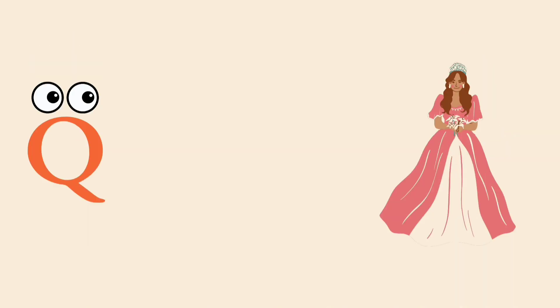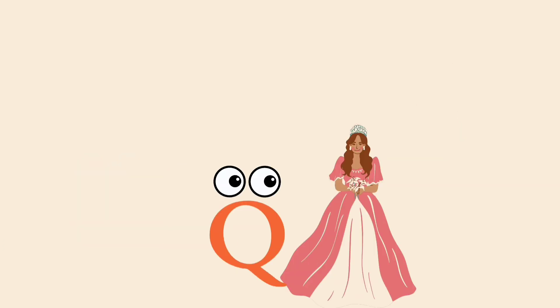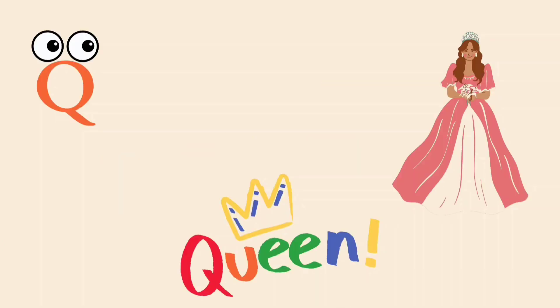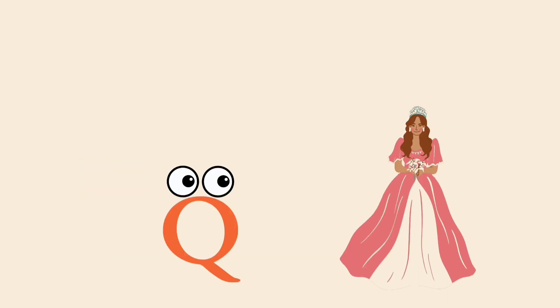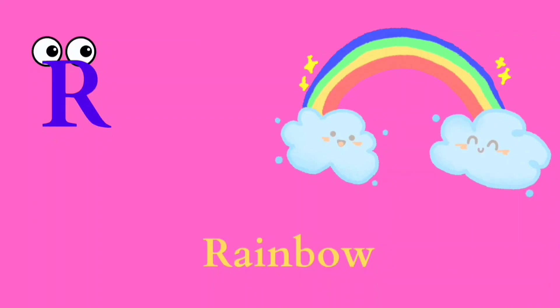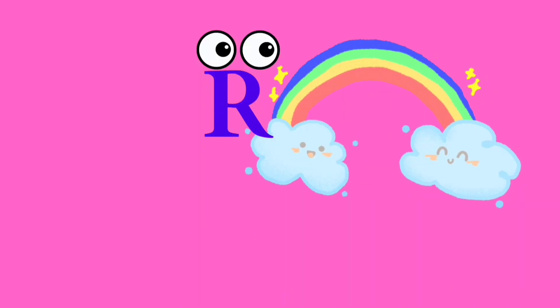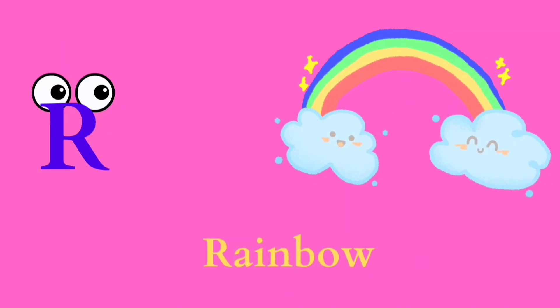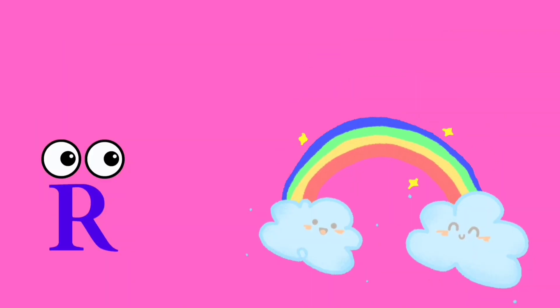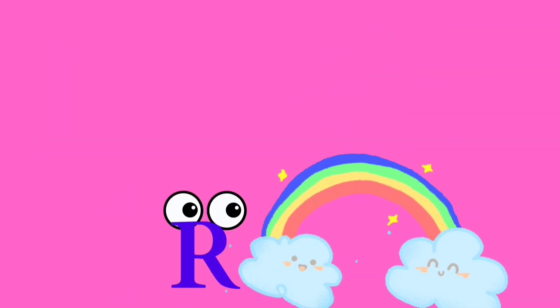Q is for queen. Q, queen. R is for rainbow. R, rainbow.